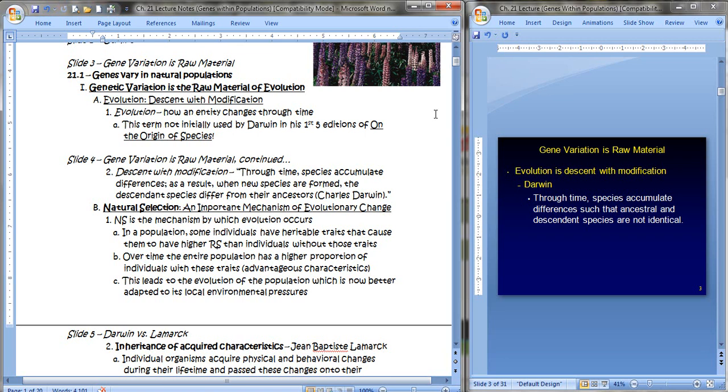Just a little reminder, it's descent with modification. Evolution is just how an entity or a population of organisms will change through time. By the way, the term evolution was not even used by Darwin himself in his first five editions of his very famous book, On the Origin of Species. It wasn't until his sixth edition that that even came up.